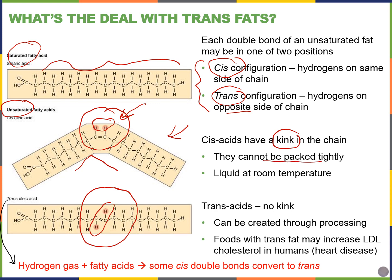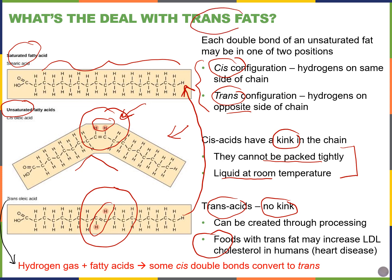When you have cis fats, they create a bending or kink in the chain, meaning they cannot pack tightly and tend to be liquids at room temperature like oils. Trans fats, in contrast, have no bending and look and behave more like saturated fats. This means trans fats tend to be more unhealthy — they can actually increase the amount of LDL or bad cholesterol in the body, leading to fat deposits in blood vessels and heart disease. Trans fats are not common in nature; we make them in industry by artificially hydrogenating oils.